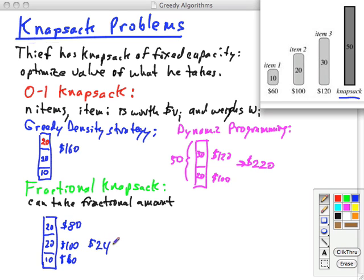That's $240, which is more than here, because this is a different problem. The rules are different here. So that shows that these two strategies are good for different problems and hopefully illustrates how the strategies differ from each other.